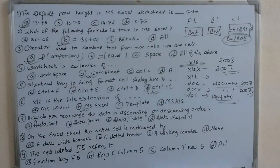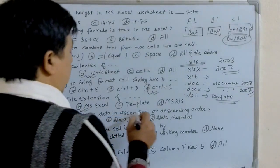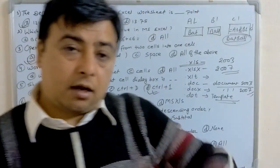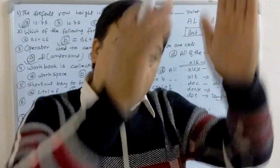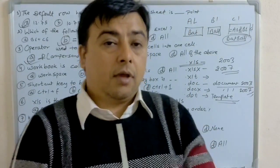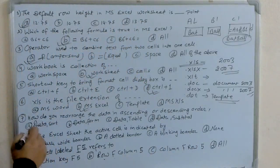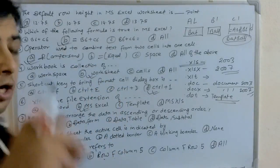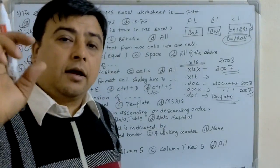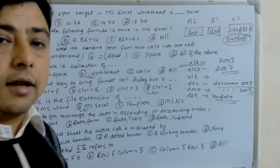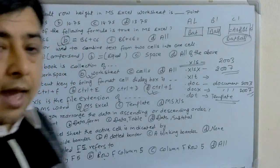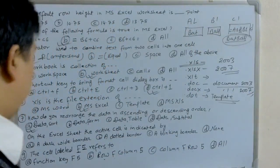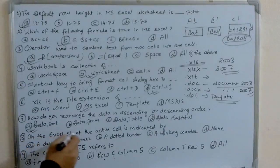Next question: how do you rearrange data in ascending or descending order? To rearrange data either in ascending order (A to Z) or descending order (Z to A), you use Data > Sort. When you click Data and then Sort, you can choose either ascending or descending order. We can rearrange data through Data Sort.